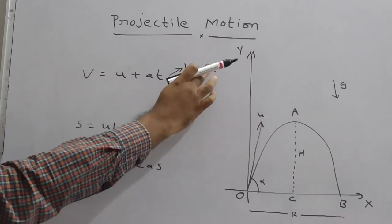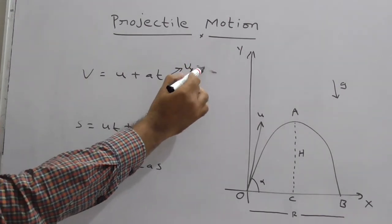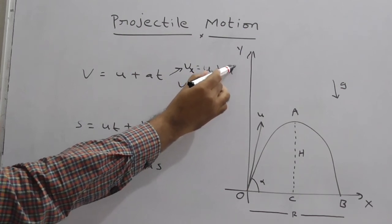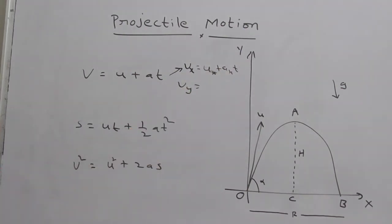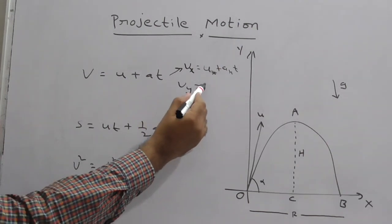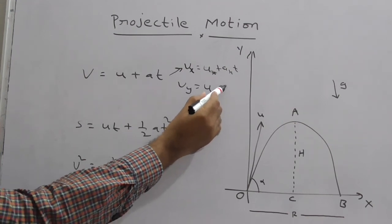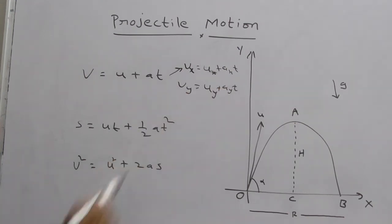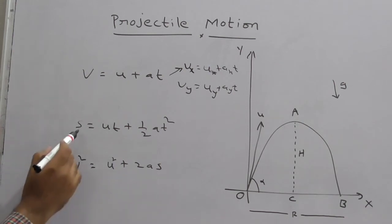vx = ux + axt. That is with respect to x-axis or in the horizontal direction. What is vy? This is uy + ayt. Clear?